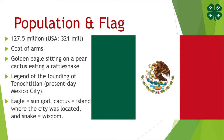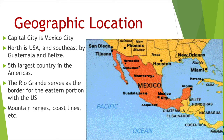Tenochtitlan was a really interesting city — set up almost like Venice with canals instead of streets, kind of on an island. Mexico is located south of the United States. The capital is Mexico City. It's bordered to the southeast by Guatemala and Belize, it's the fifth largest country in the Americas, and the Rio Grande serves as the border for the eastern portion with the U.S.